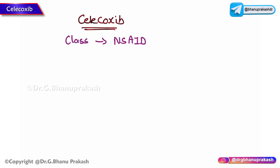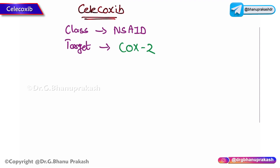What is the target of Celecoxib? It mainly targets the COX-2 enzyme. Remember, it mainly targets the COX-2 enzyme.